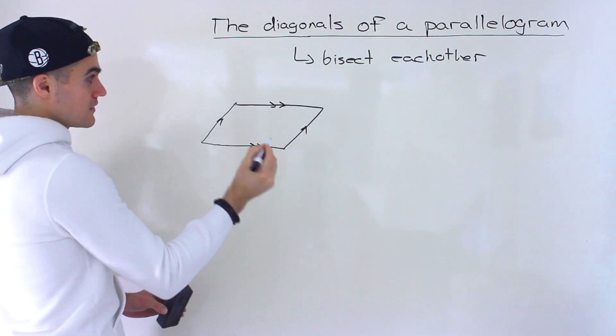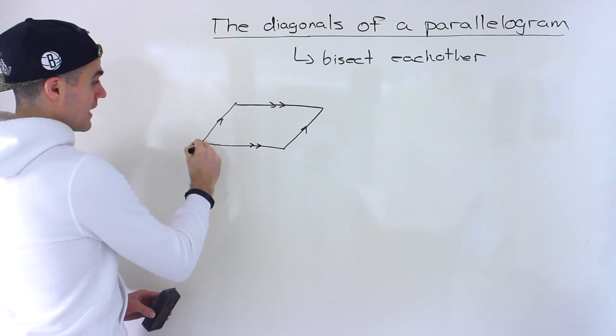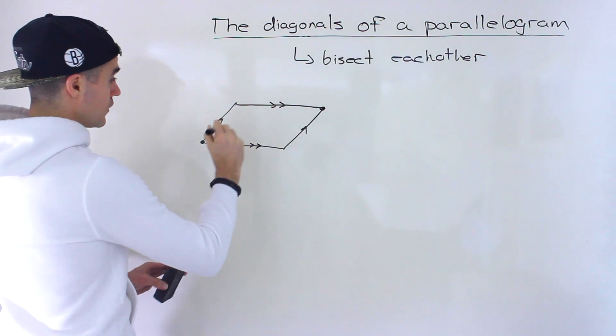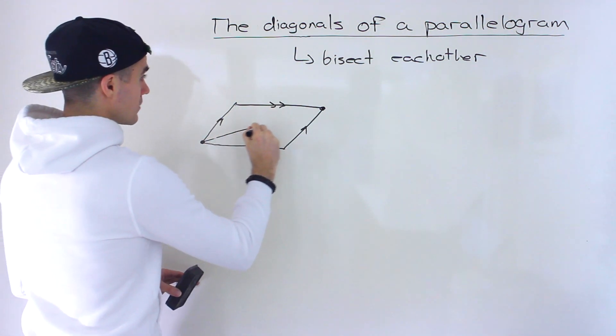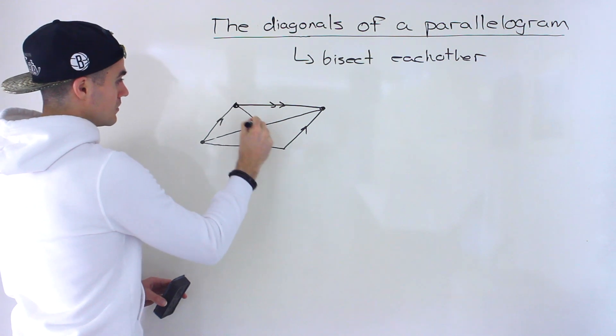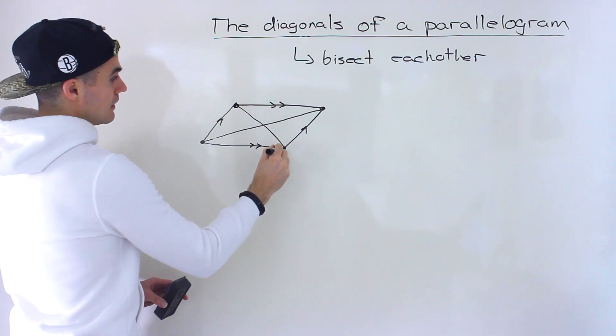Right. And if we draw the diagonals, remember what are the diagonals? They're basically the lines that join the opposite vertices. So there's a diagonal over here, and then there's a diagonal over here like that.